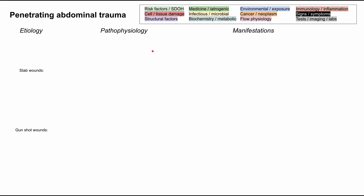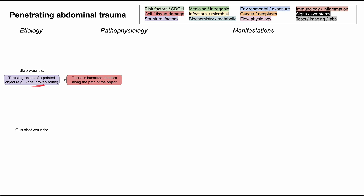If you've seen the penetrating chest trauma video, the beginning is going to be quite similar. You can have penetration from two big categories: stab wounds and gunshot wounds. For a stab wound, you have the thrusting action of a pointed object — a knife, a broken bottle, a spear, anything sharp. The tissue is lacerated and torn along the path of the object, and the depth of injury is usually greater than the width.